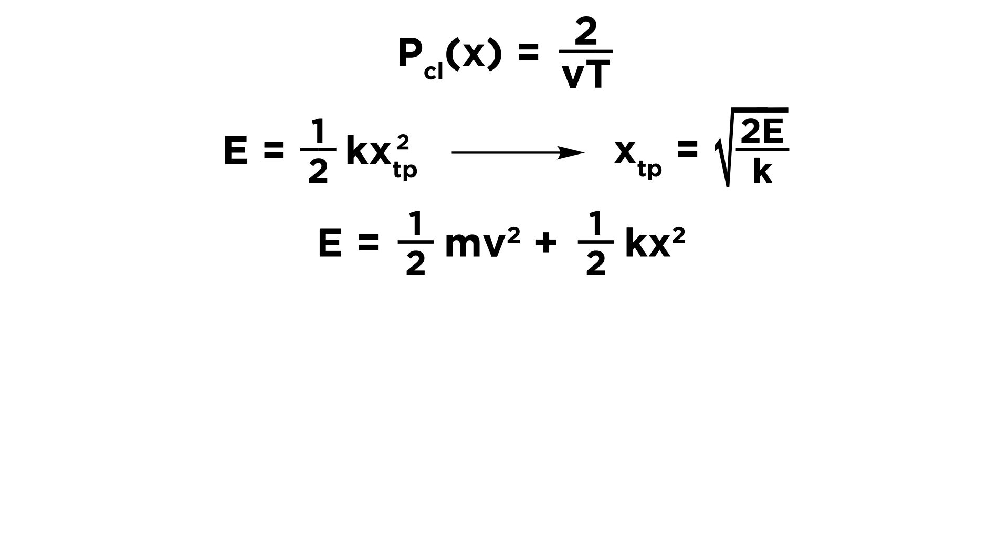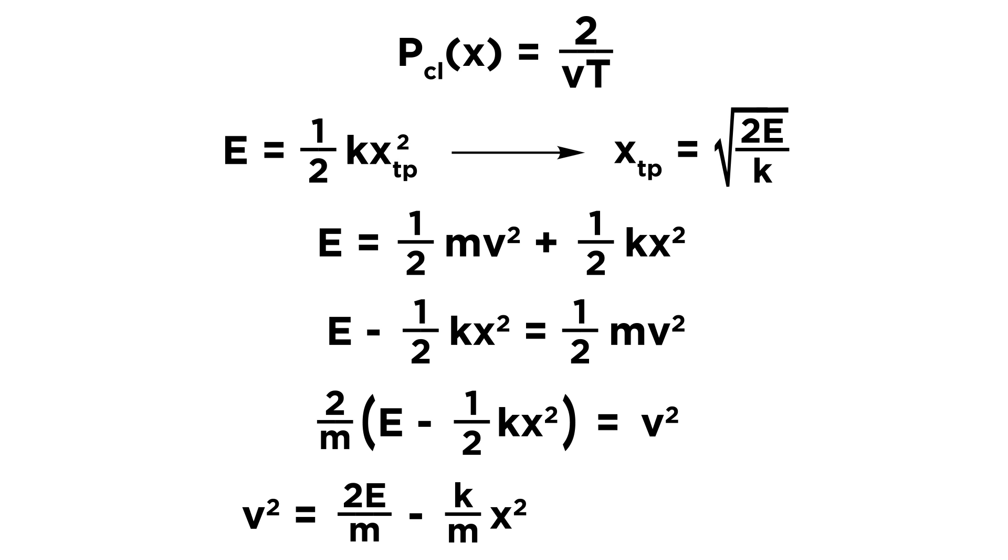Now let's go back to the previous equation for total energy and solve for v. We can subtract this potential energy term from both sides, then multiply by 2 and divide by m, and we get v squared as being equal to this. Distributing we get 2e over m minus k over m times x squared. And since omega equals root k over m, we can replace k over m with omega squared to get this.